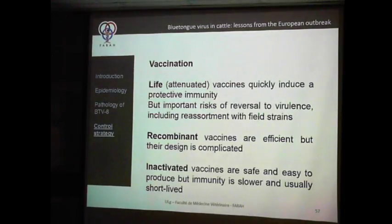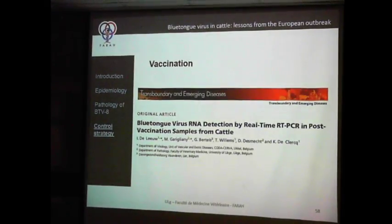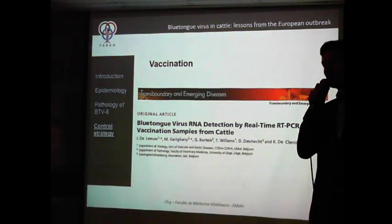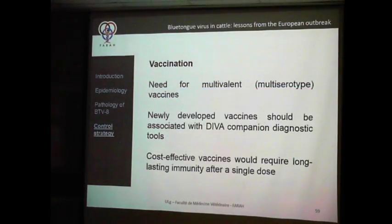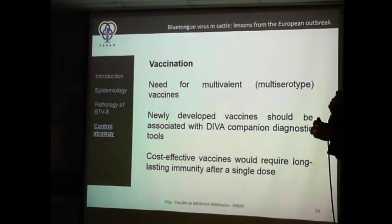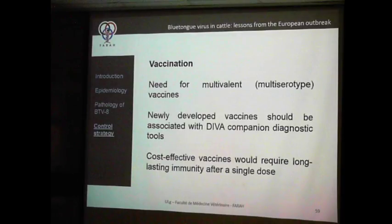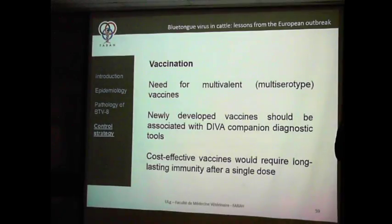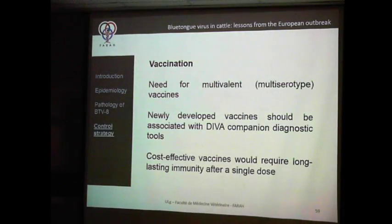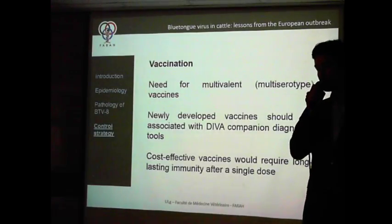Recombinant vaccines can really be an option, though their design can be complicated. Several are currently in development. Keep in mind that vaccine RNA, even from inactivated vaccines, can be detected and misinterpreted as a positive case — you need diagnostic tools allowing differentiation between vaccinated and infected animals. Currently there is a need for multivalent, multi-serotype vaccines, because several BTV serotypes are spreading toward Europe and will cause problems in the future with global warming.